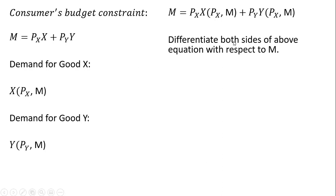We're going to differentiate both sides of the above equation with respect to M income. And you'll get something like this. So the left-hand side derivative of M is just 1, and we get this following result on the right-hand side of the equation.